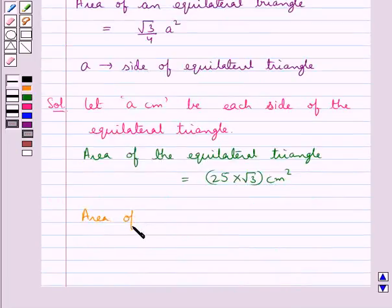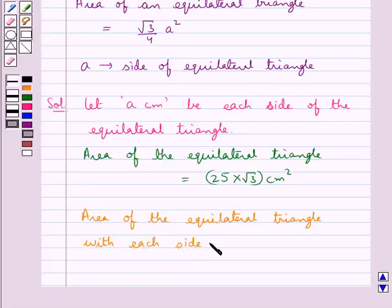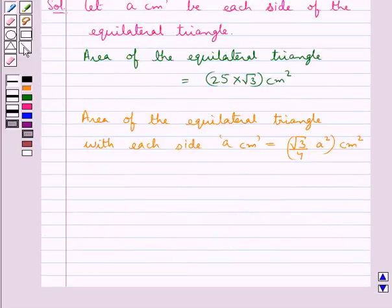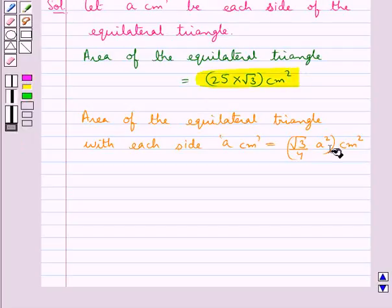Now the area of the equilateral triangle with each side of measure A cm is equal to root 3 by 4a square cm squared. So we would equate these two areas.